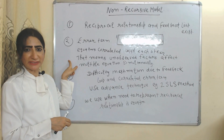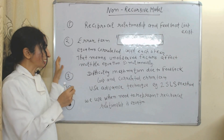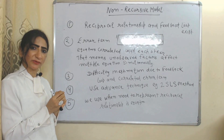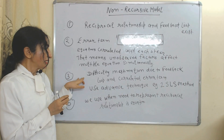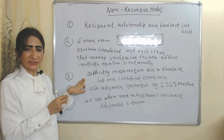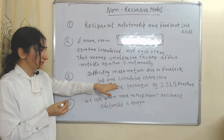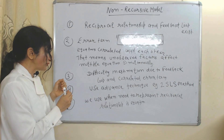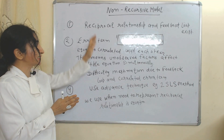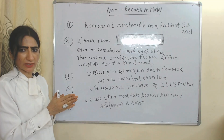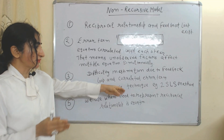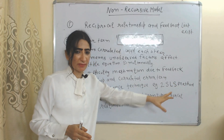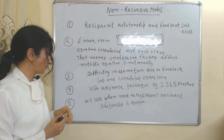In the non-recursive model, reciprocal relationships and feedback loops exist, and error terms in equations are correlated — meaning unobserved factors affect multiple equations simultaneously. This causes difficulty in estimation because of the feedback loop and correlated error terms. That's why we use more advanced techniques, such as the Two-Stage Least Squares method, in the case of non-recursive models.